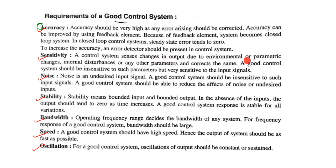Second, sensitivity — a control system senses changes in output due to environmental or parametric changes and corrects the same. A good control system should be insensitive to such parameter changes but very sensitive to the input signals, so that we can get the desired output.